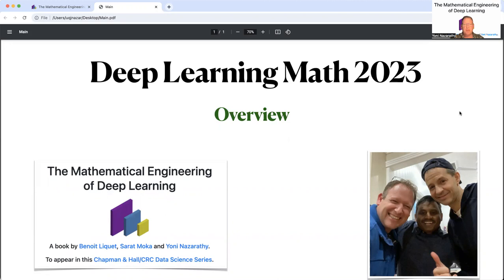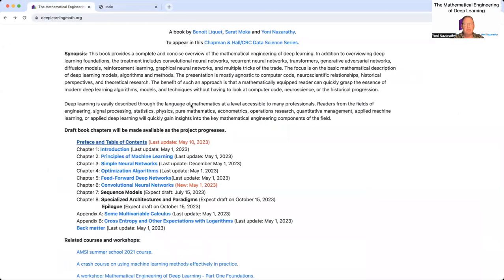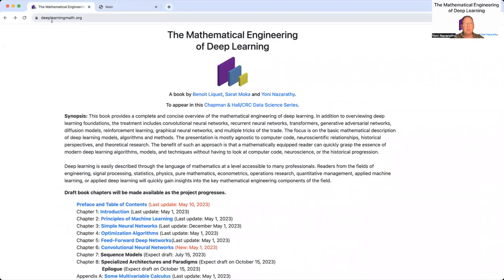The book will appear in the Chapman and Hall CRC Data Science Series and is currently available in draft form online at deeplearningmath.org. Head over to deeplearningmath.org if you'd like to see draft copies of the book.